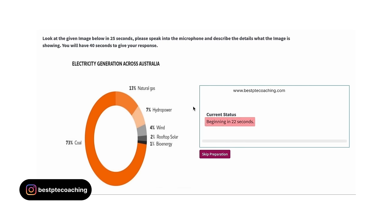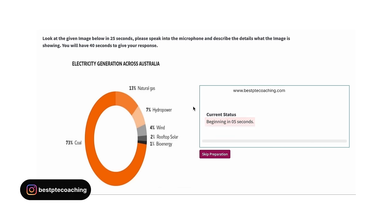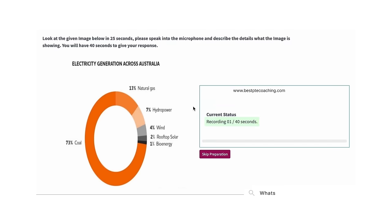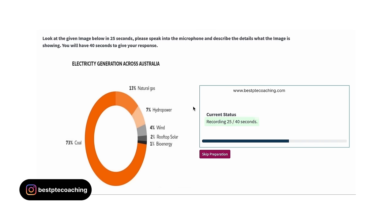Demo answer for an image about 'Electricity Generation Across Australia': 'The image explains information about electricity generation across Australia. I am supposed to speak for 40 seconds on this image. There are different parts in the image which are 13% natural gas, 7% hydro power, 4% wind, 2% rooftop solar, and also it has 1% bio energy and 73% coal. One of the parts has maximum value while the other has minimum value. To conclude, the image is highly informative and insightful.'